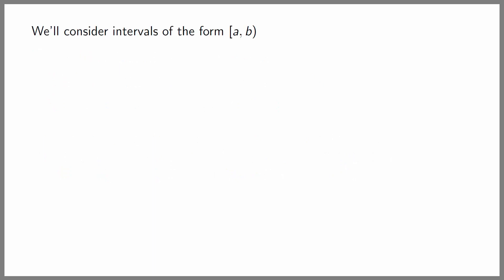We'll consider intervals that are closed on the left and open on the right. That is, intervals of the form [A, B), whose elements are X belonging to ℝ such that A ≤ X < B. This interval includes the numbers between A and B. Because the interval is closed in A it contains A, but since it's open in B it doesn't contain B.